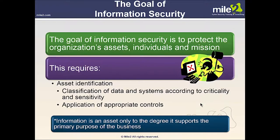The goal of information security is to protect the organization's assets, individuals, and mission — it's not just about IT. We must identify our assets and classify data and systems according to how critical or sensitive the information is, such as secret or top-secret classifications. We then apply appropriate controls: the more sensitive the information, the stricter the controls. Information is an asset only to the degree it supports the primary purpose of the business.